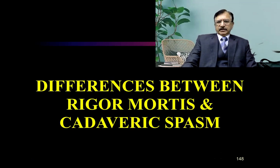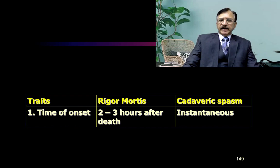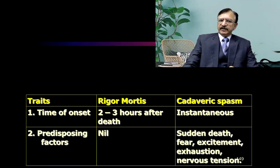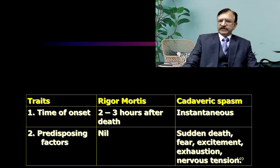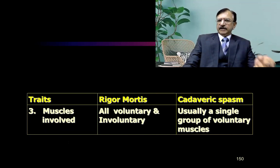This graph chart shows the differences between rigor mortis and cadaveric spasm. Regarding time of onset: rigor mortis sets in two to three hours after death, after the period of primary flaccidity, whereas cadaveric spasm is instantaneous — it starts at the moment of death, as it is the record of the last volitional activity. The predisposing factors in rigor mortis are nil, as it appears in all types of death. Whereas for cadaveric spasm, predisposing factors include sudden death, extreme emotional states, fear, exhaustion, or nervous tension. In rigor mortis, all voluntary and involuntary muscles are involved, whereas in cadaveric spasm, a single group of muscles — usually the muscles of the arms and hands — is involved.